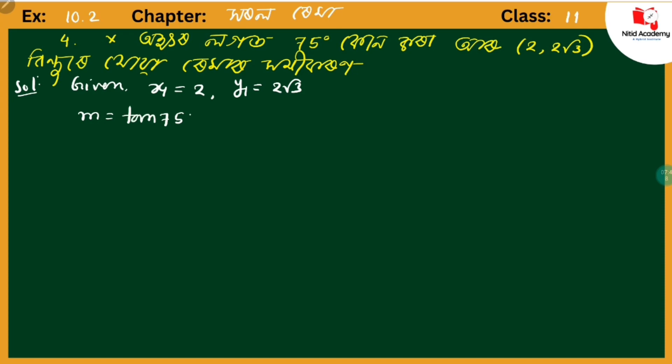To find tan 75 degree, we can write it as tan(45 + 30) degrees, since 45 plus 30 equals 75. We'll use the formula for tan(a + b).